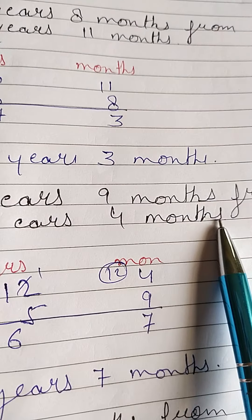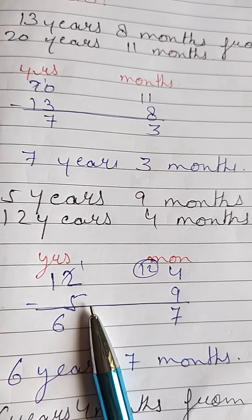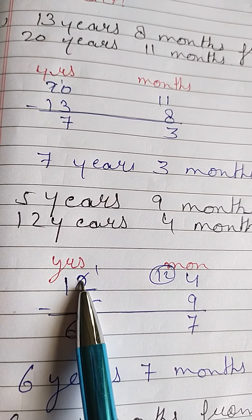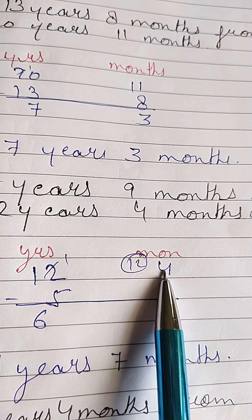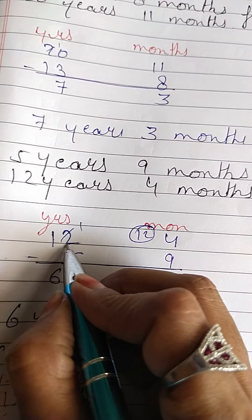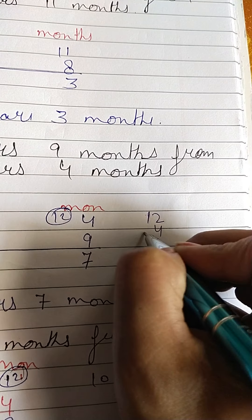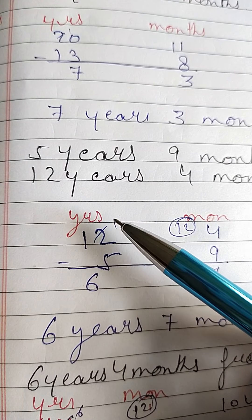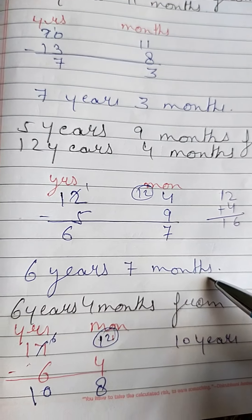Next, subtract 5 years 9 months from 12 years 4 months. Since 4 months minus 9 months is not possible, give a carry of 1 year from 12, which means 12 months. So 12 plus 4 gives 16, and 16 minus 9 is 7 months. The remaining years: 11 minus 5 gives 6. So your answer is 6 years and 7 months.